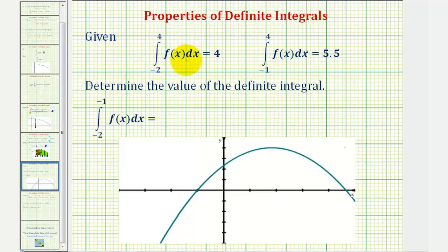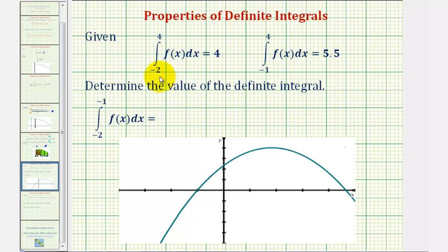We're given the definite integral of f(x) from negative two to four equals four, and the definite integral of f(x) from negative one to four is equal to 5.5. A couple things to notice here: first, we're integrating the same function, but the limits of integration are different.